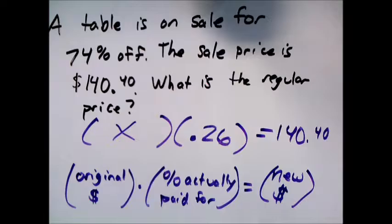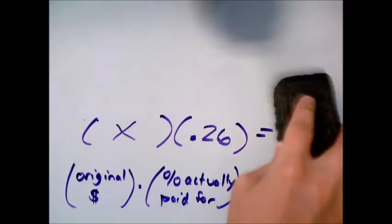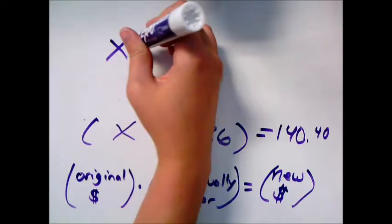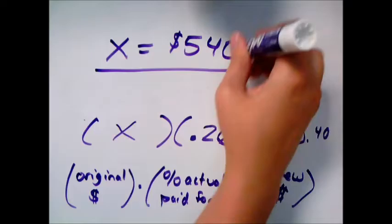And so the thing we don't know here is the original price. So that gives us a really quick equation to solve. X times 0.26 gives us our sale price, and we're trying to figure out what X is. So divide both sides by 0.26, and I end up with X equals $540.